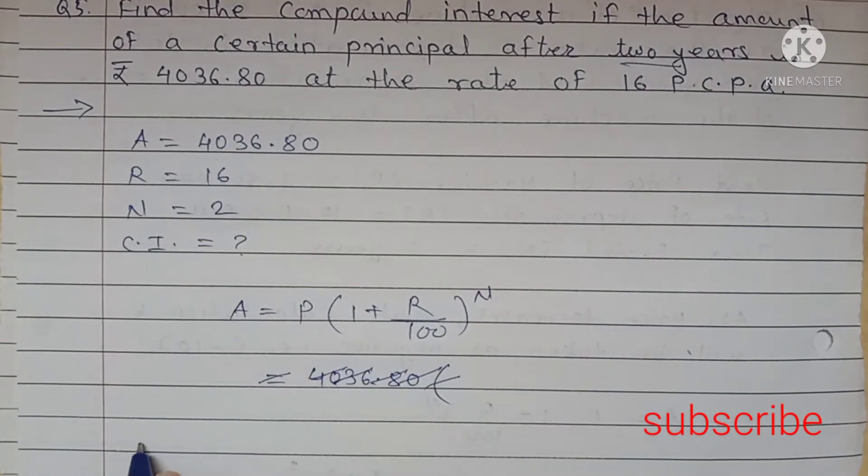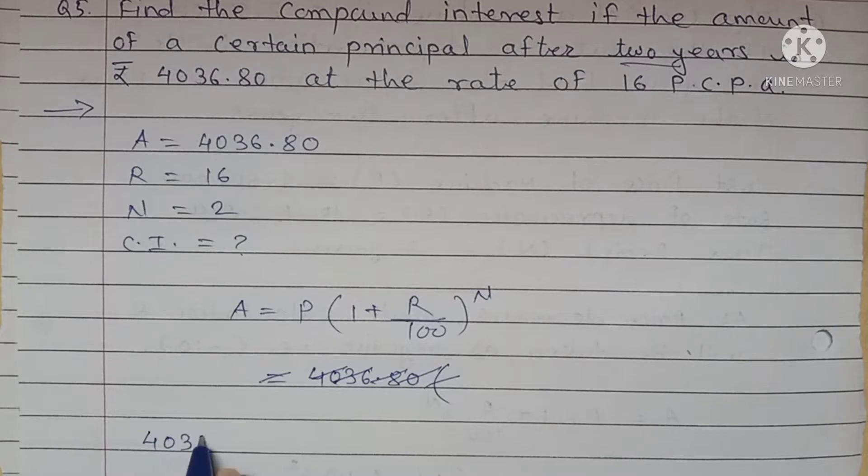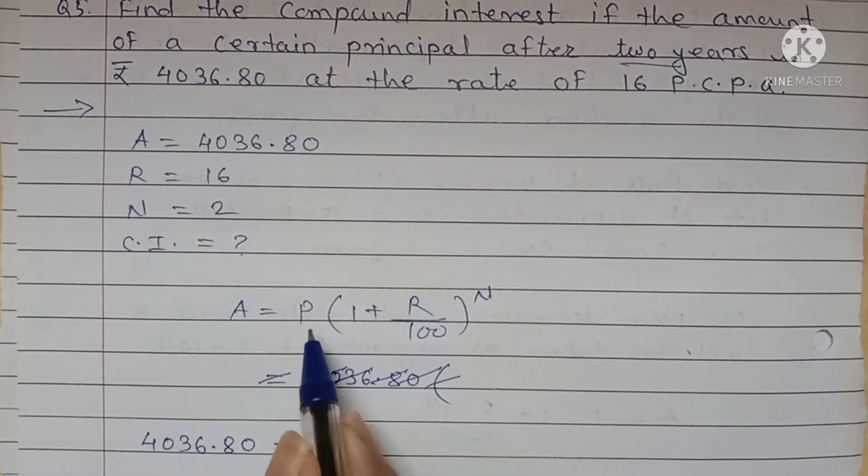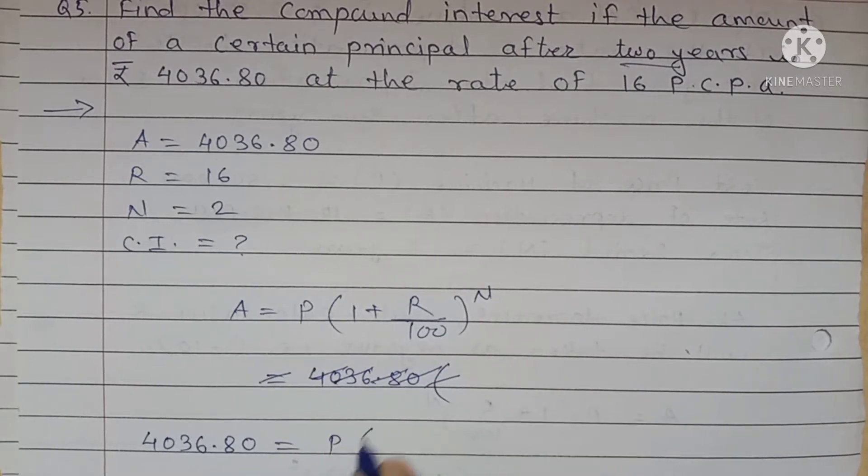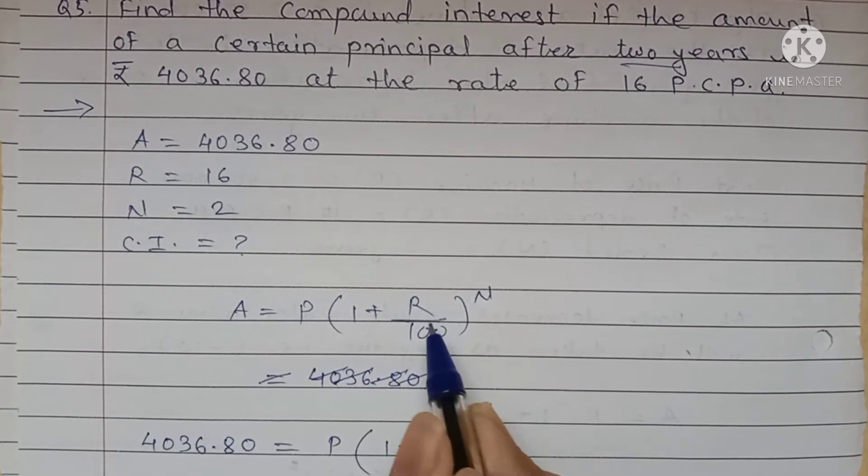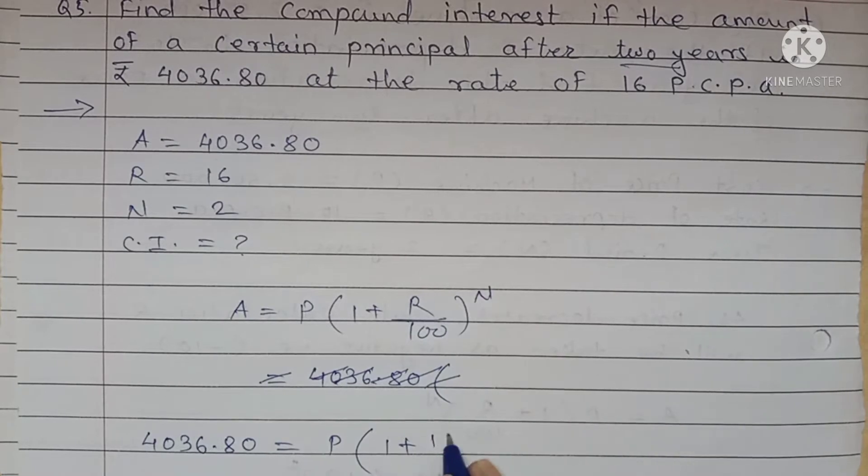Means you can write down here 4036.80 is equal to P is not given. You can write down P as it is into bracket 1 plus R is given 16 upon 100 bracket square.